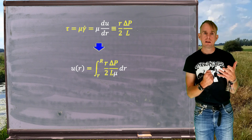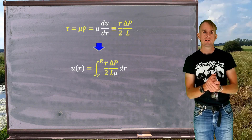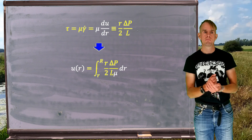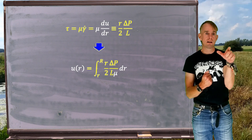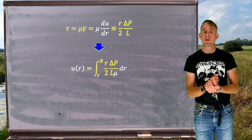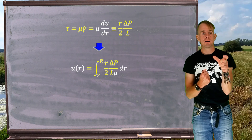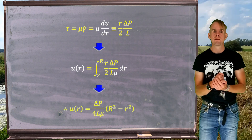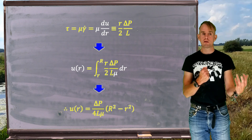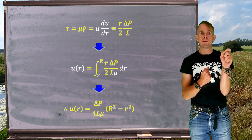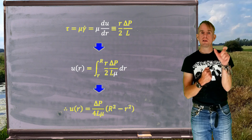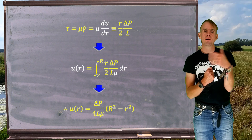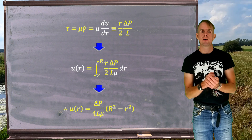Since u and r both appear in that first derivative du/dr, we simply integrate the expression to get velocity as a function of radius. We integrate between little r and big R, from r/2 · Δp/(L·μ) dr. Working through the calculus, u as a function of arbitrary position r is Δp/(4Lμ) times (R² − r²), where R is the pipe radius and r is the integration starting radius.